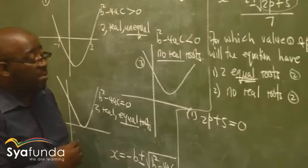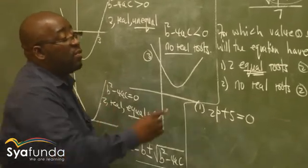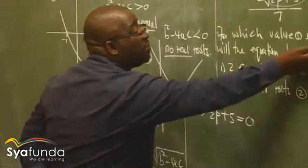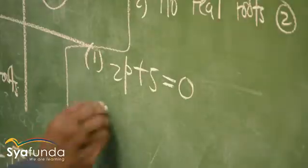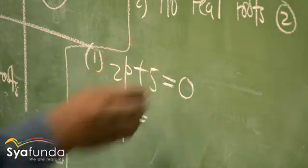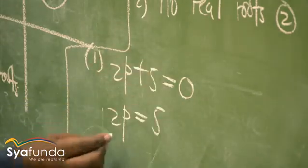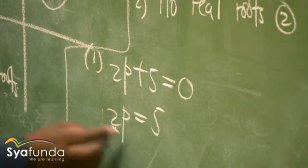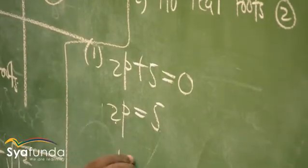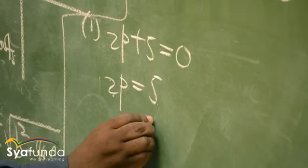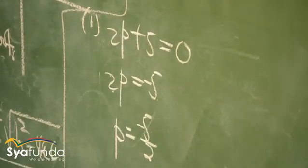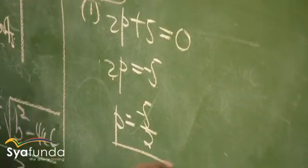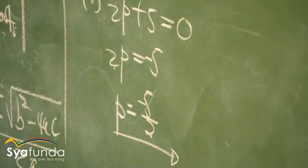We solve for p. Setting 2p + 5 equal to zero gives 2p equals negative 5. Dividing both sides by 2: p equals negative five over two. Be careful not to forget the negative sign. That is the value of p for which the equation has two equal roots.